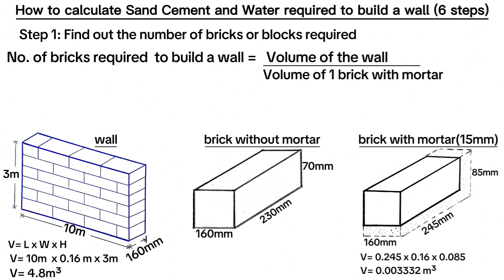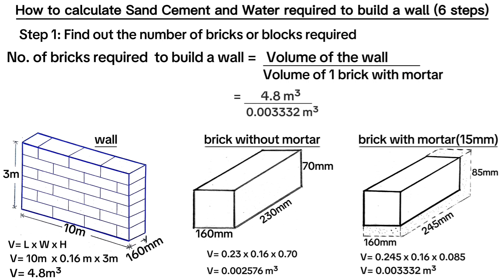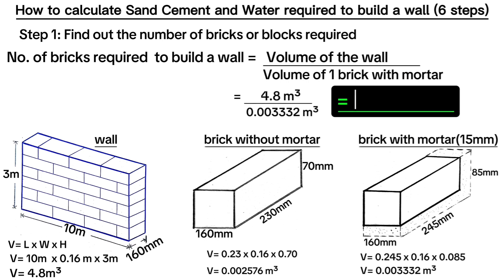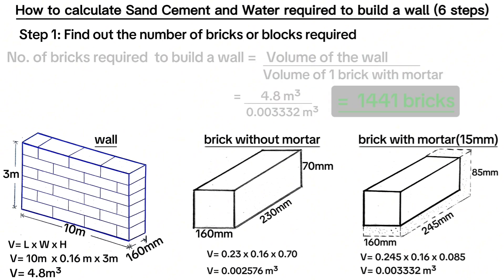Volume of one brick without mortar is equal to 0.002576 meters cubed. Number of bricks required to build a wall is equal to volume of the wall divided by volume of one brick with mortar. When we feed in our figures here, we get 1,441 bricks. Therefore, for a wall of 10 meters along the length and 3 meters along its height, you need 1,441 bricks.